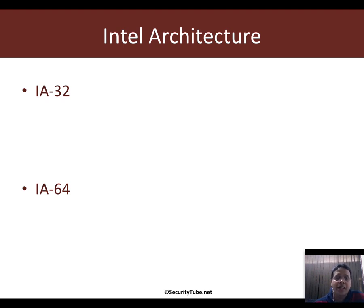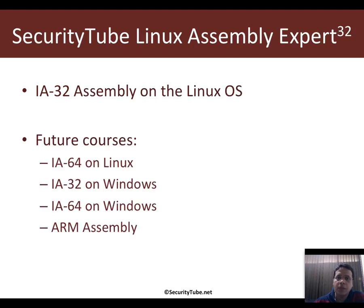Intel architecture specifies assembly language for two families: IA32, the 32-bit assembly, and IA64, the 64-bit assembly. In this course we will look at IA32 assembly and learn how to write and run programs in the Linux operating system.